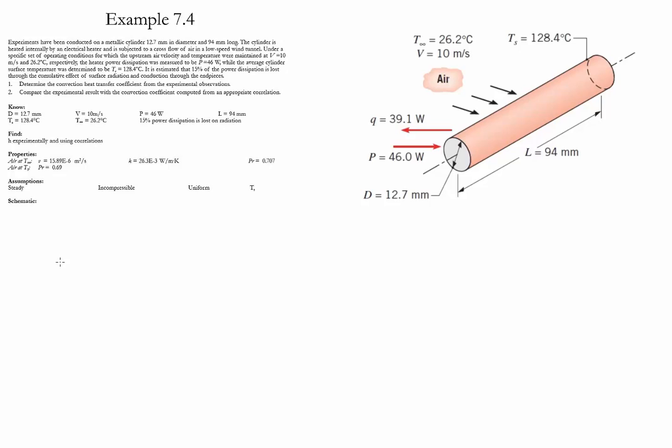Let's start the analysis by evaluating the convection coefficient using the experimental results. We know that the heat loss is going to be equal to the average heat transfer coefficient times the area times the difference between the temperatures.